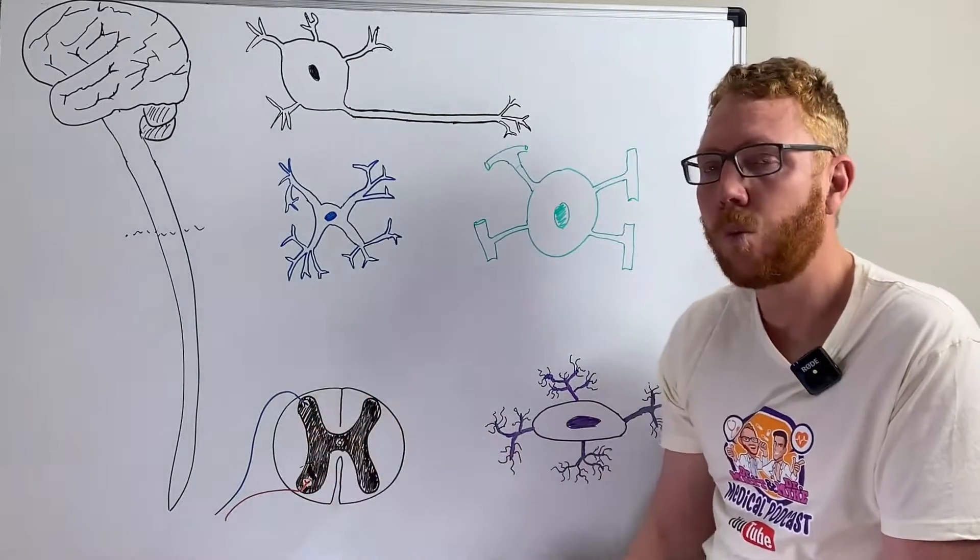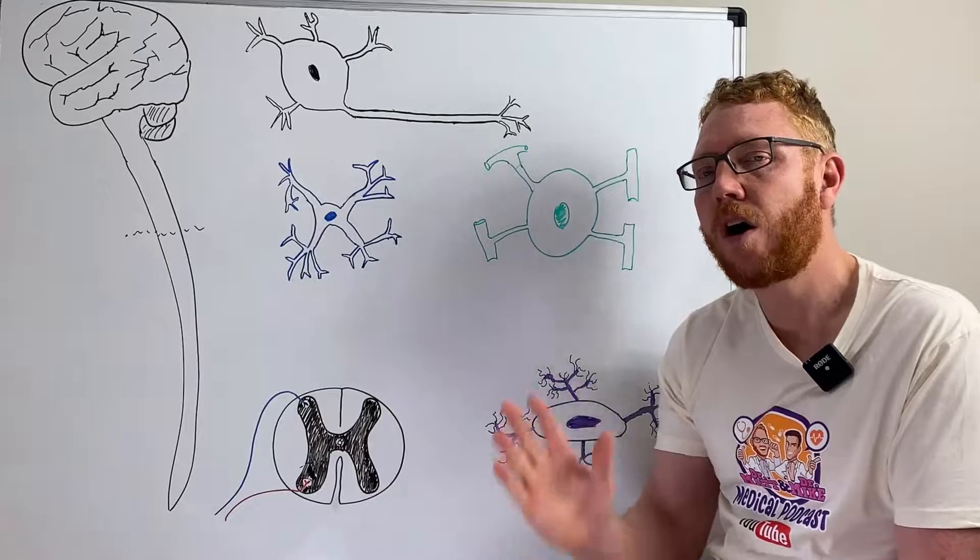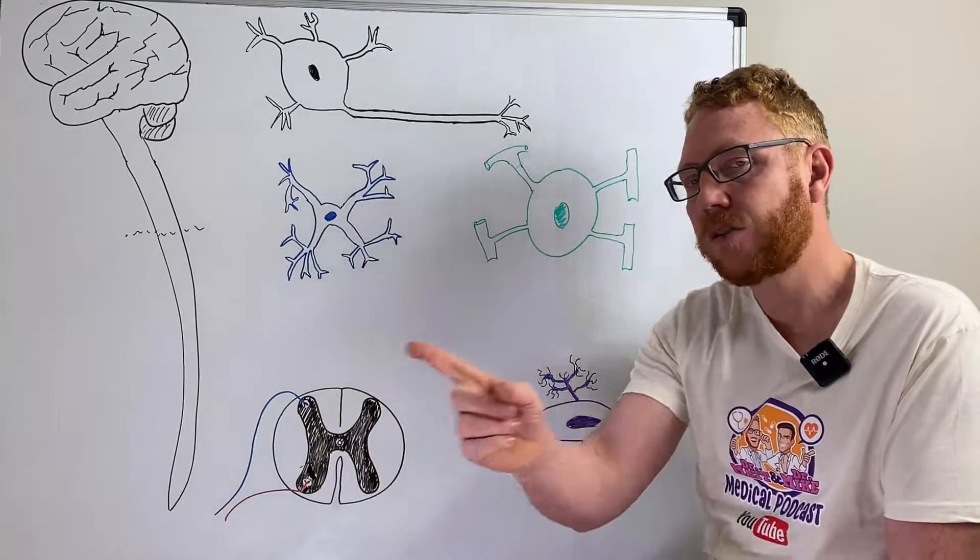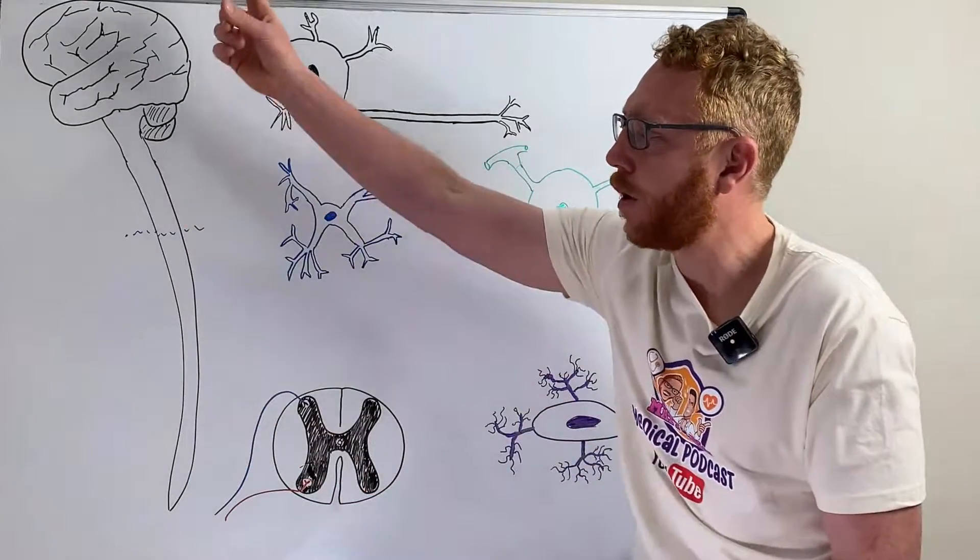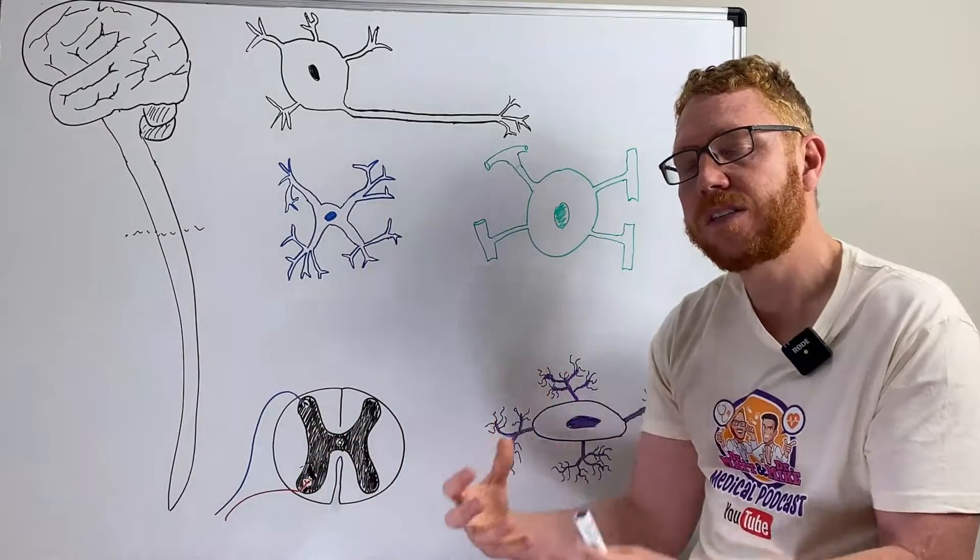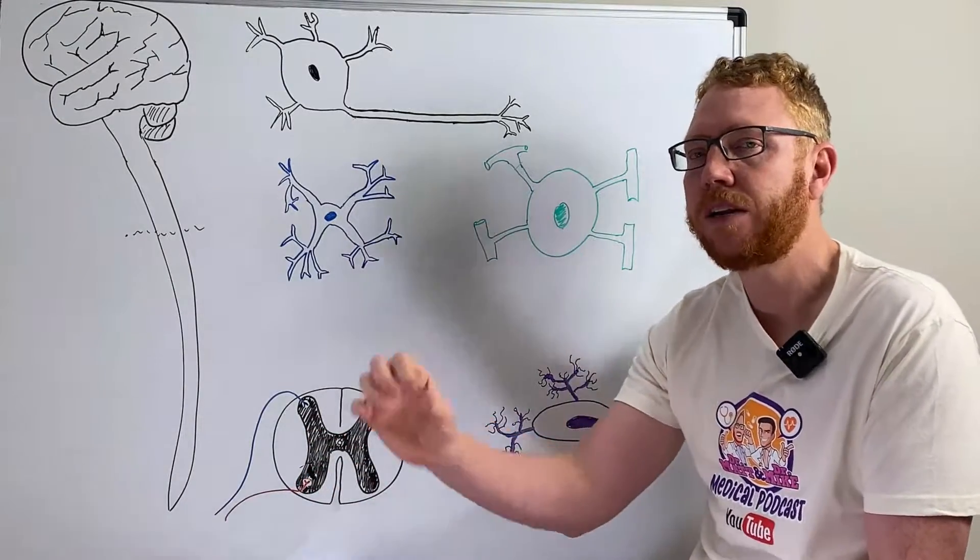Whereas outside in the white matter, this is where the tracks are, where the highways are. This is where the axons are going up and down, up to the brain and back down. It's white because this is insulated to make the speed go quicker.